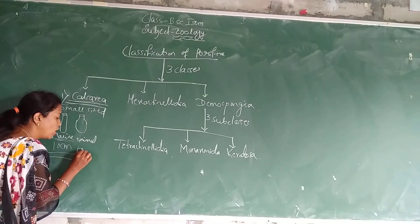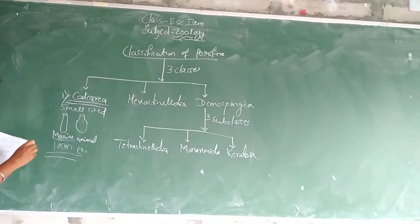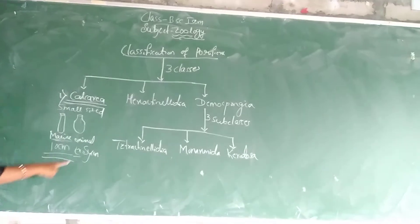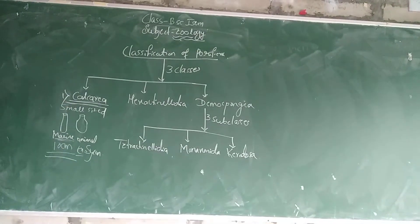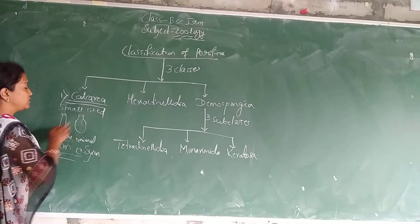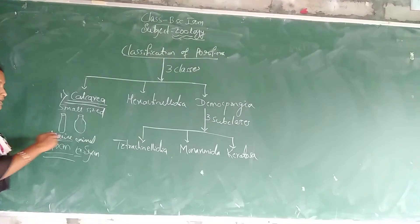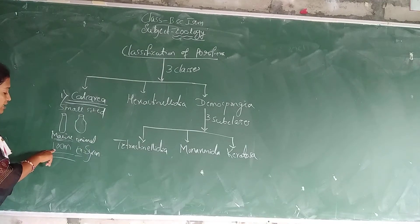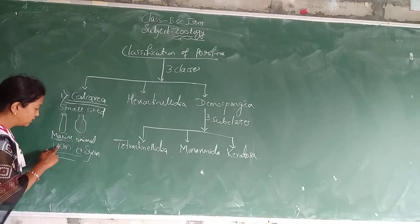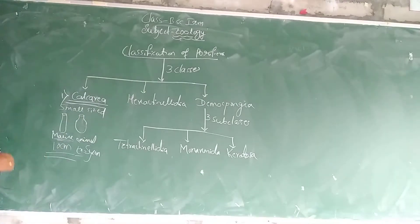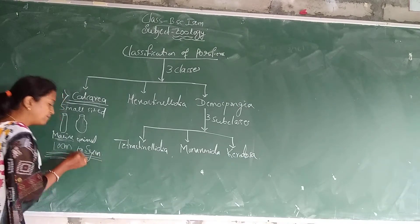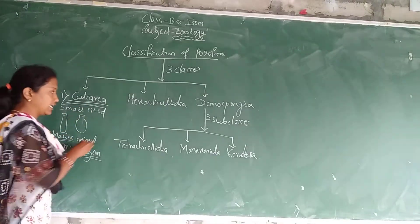What is the example of Calcarea? The example is Sycon. Sycon is the animal we include in Calcarea. These are small sized, cylindrical or vase-like marine animals, below 10 cm in height. The example is Sycon.